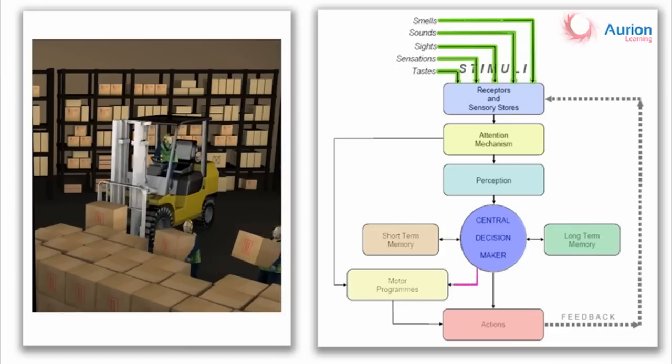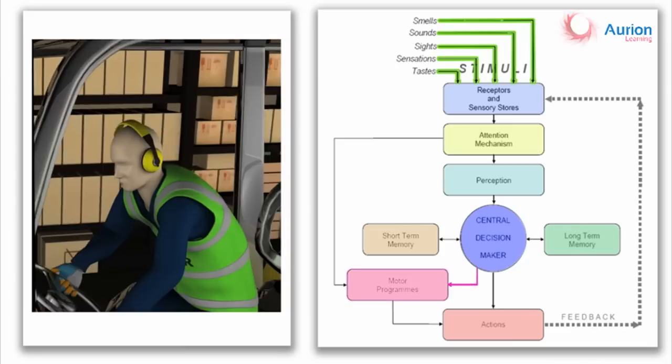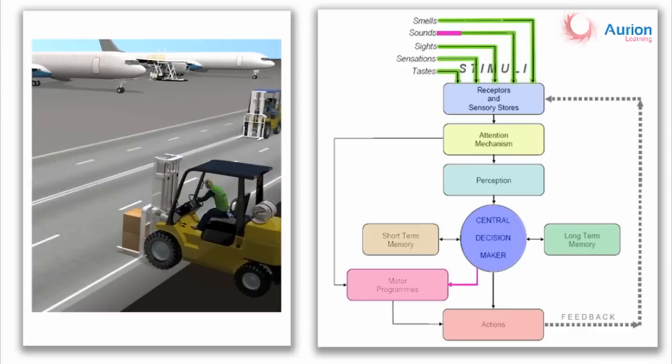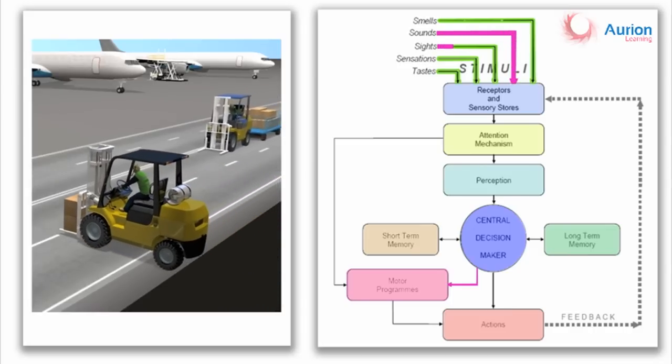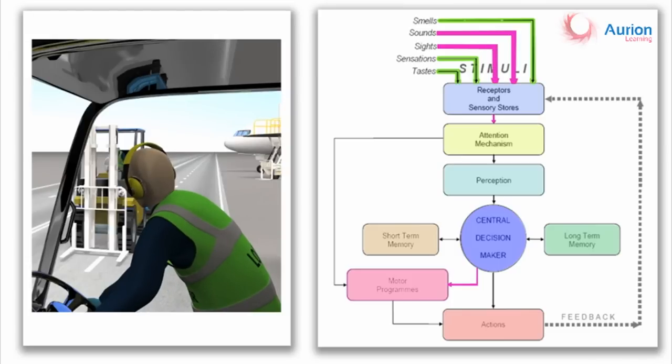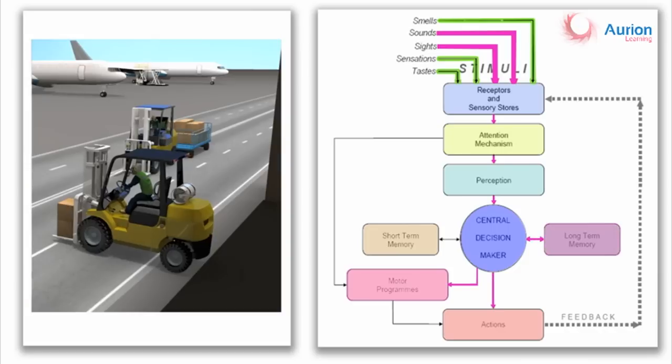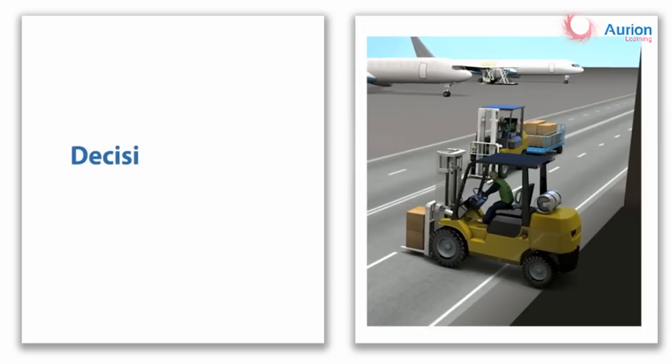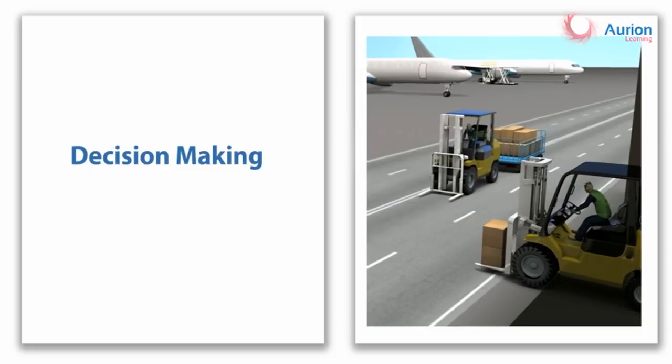To sum up and return once again to the human information processing model: this man was operating a forklift relying on his motor programs. His senses alerted him that something was wrong. His memory told him that crashes at speed cause damage. He took the action of applying the brakes and an accident was avoided. This is what we call in a word, situation awareness, or simply being aware of what is going on around you, being able to predict what is going to happen and taking a decision based on it.